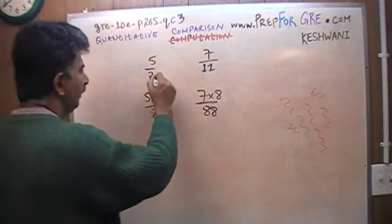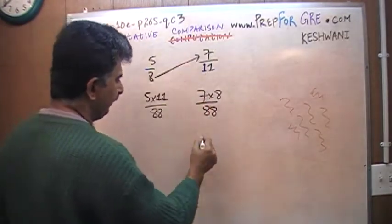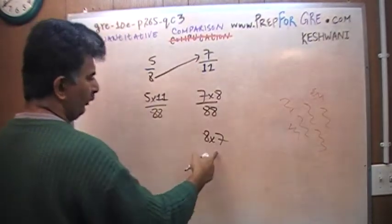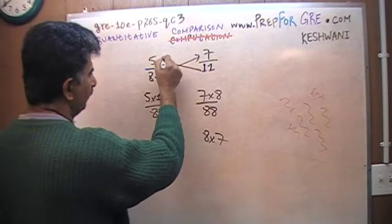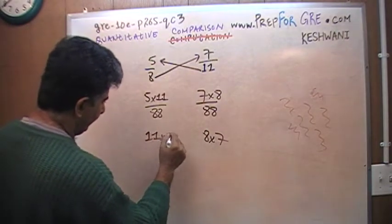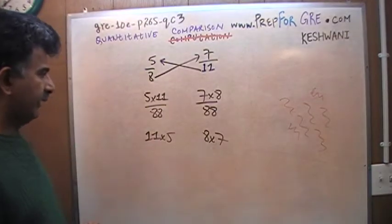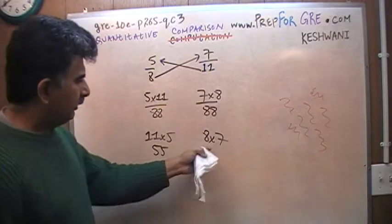What you do is take the bottom of this guy, multiply it by the top of this guy: 8 times 7. This times that comes in this column, and then you always start from the bottom, go to the top: 11 times 5, that goes here. As you can see, you have the same thing except I didn't waste my time writing out the common denominator. So 11 times 5 is very simple, 55. What is 8 times 7?